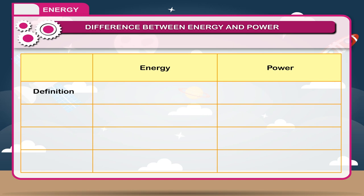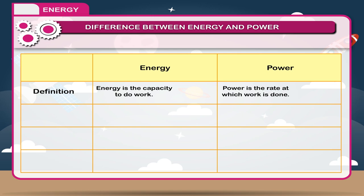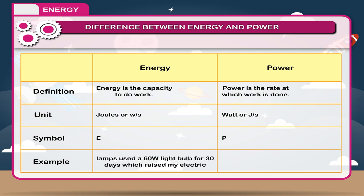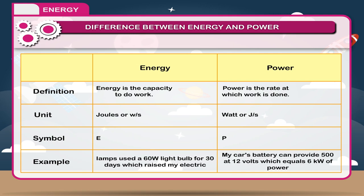Difference between energy and power: Energy is defined as the capacity to do work, while power is the rate at which work is done. The unit of energy is joules (or watt-seconds), and the unit of power is watts (or joules per second). Energy is represented by the symbol E, and power by P. For example, a lamp used at 60 watts, or a car battery that can provide 6 kilowatts of power.